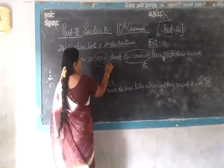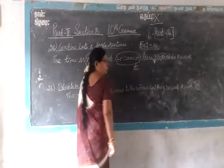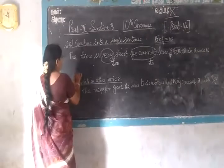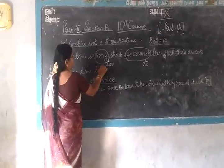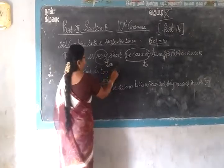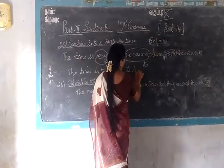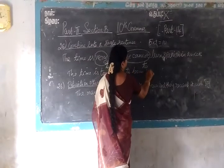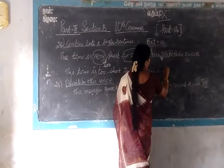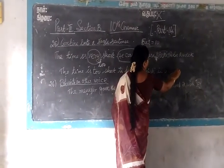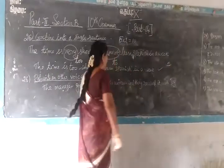Here you are using T-O-O. For this you are using T-O-2. So the answer for this is: 'the time is too short.' You are using T-O-2. So the answer for this — if you write it, you can get 2 marks.